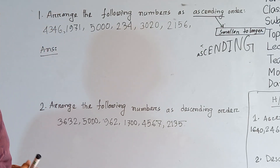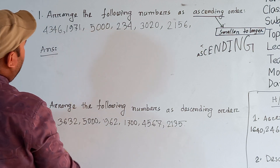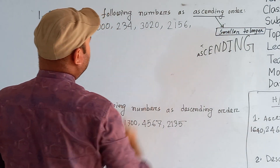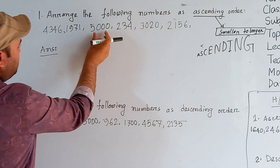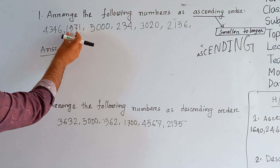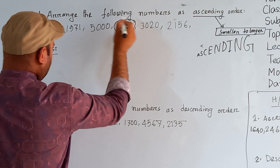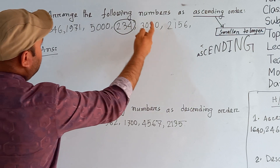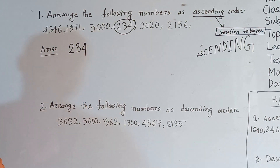The numbers given are: 4346, 1971, 5234, 3020, and 2156. Now, 2156 has four digits, 3020 has four digits, 5000 has four digits, 1971 has four digits, and 4346 also has four digits. But look here — 234 is the only number with three digits. Since three-digit numbers are smaller than four-digit numbers, we write 234 first.